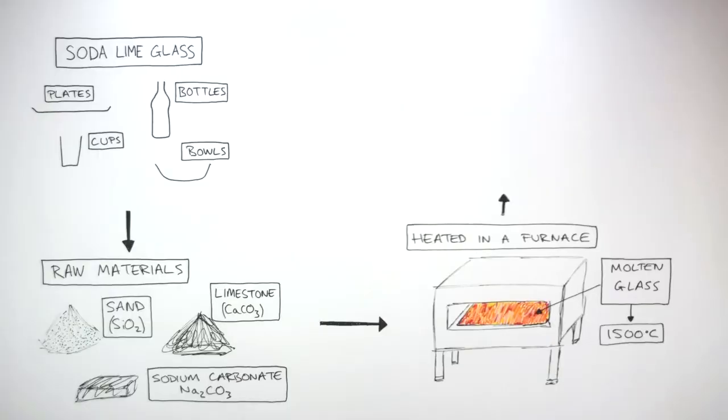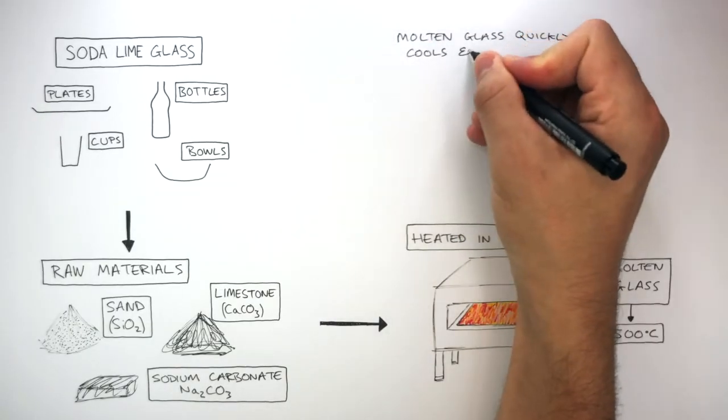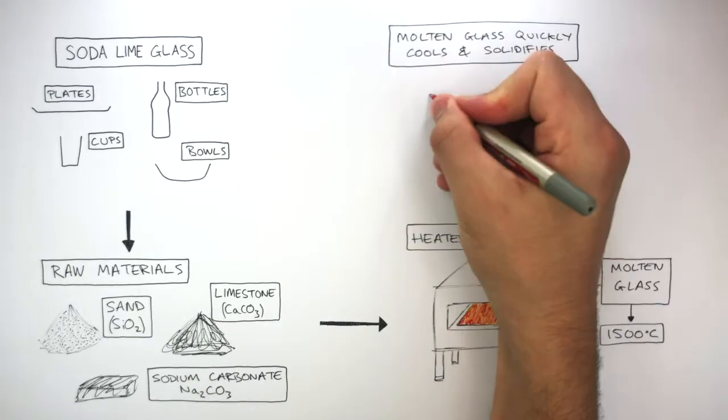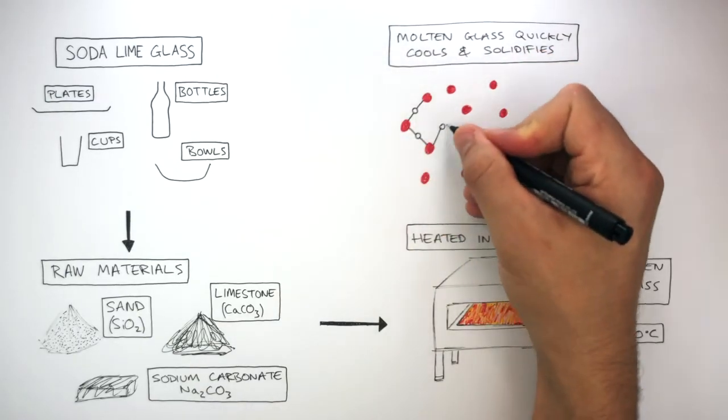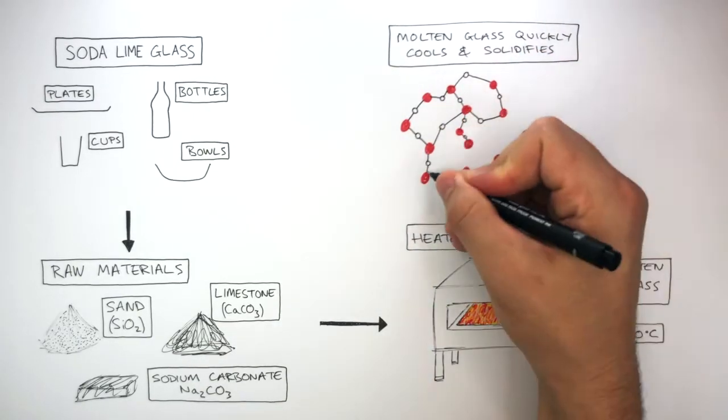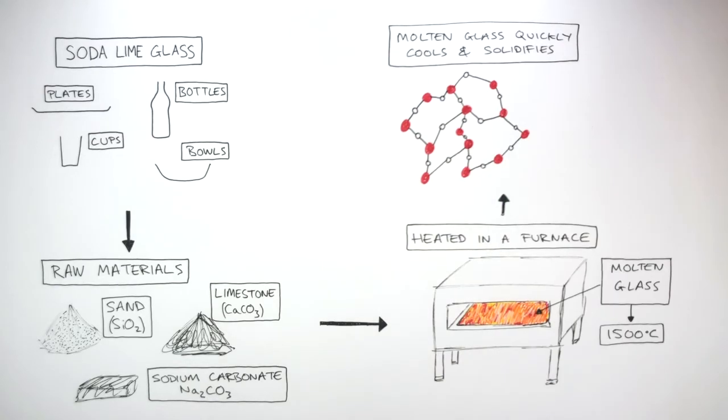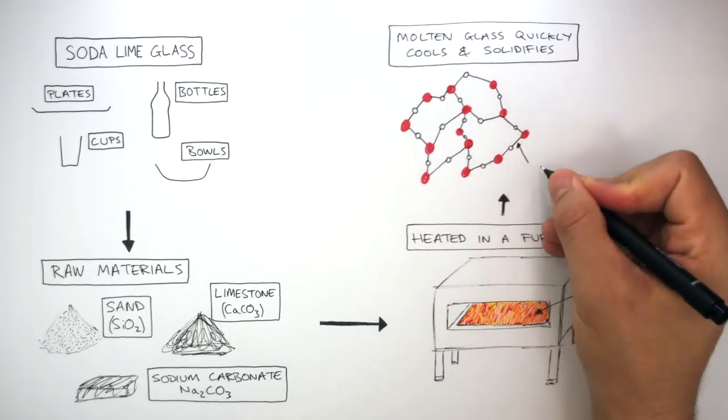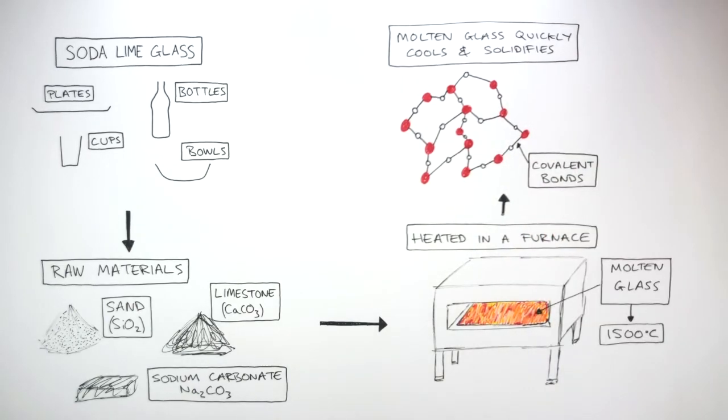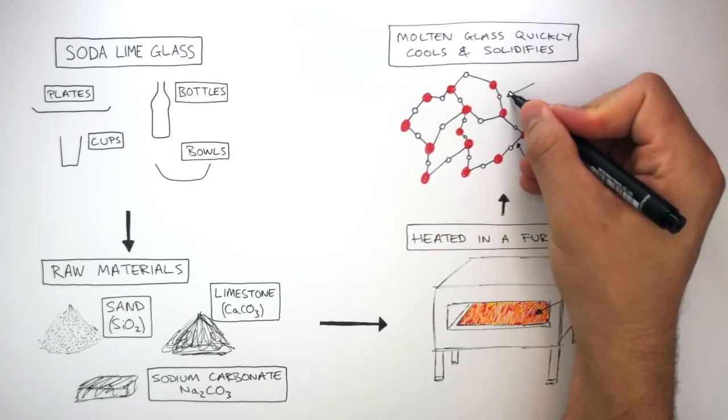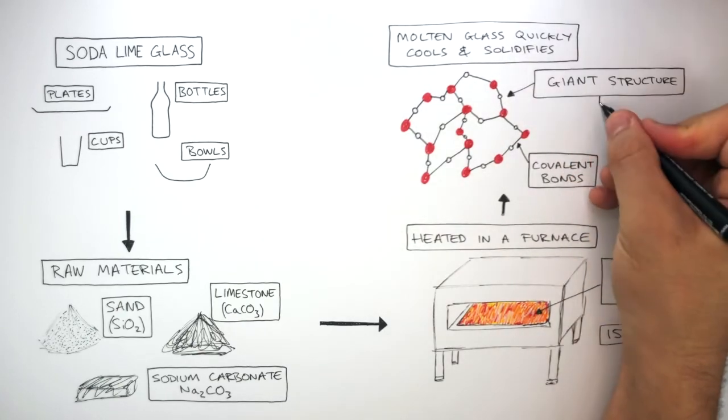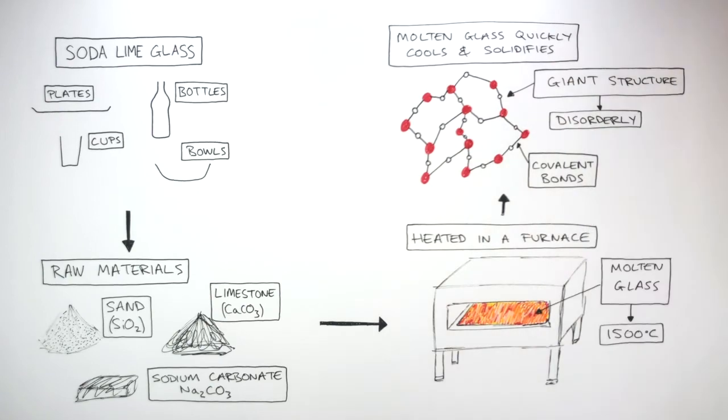In the next stage, the molten glass quickly cools and solidifies. These atoms cool so quickly, they form a disorderly structure. There is no regular arrangement to this giant structure of atoms where these lines represent the covalent bonds holding the atoms in place. Overall, we say this has a giant structure which is disorderly because there is no regular arrangement of the atoms.